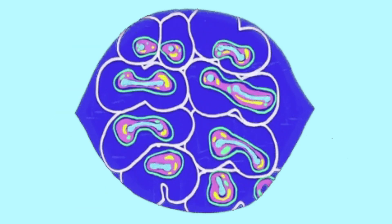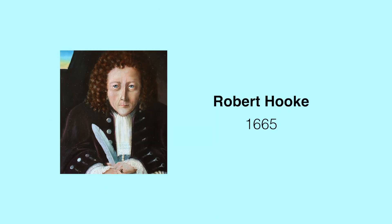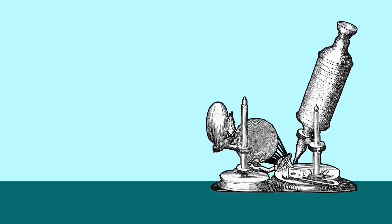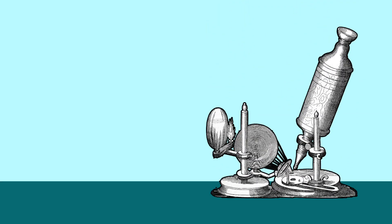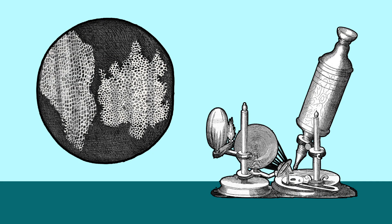The cell was first discovered and named by Robert Hooke in 1665. Unhohne plant ke death cell walls ko study kia. They looked like small rooms when viewed through the microscope, and thus he named it cell.